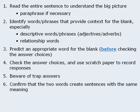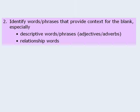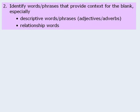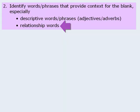So that's the general strategy. Now before we examine each step in greater detail, I want to point out that the second step is by far the most important concept. If we're unable to identify words and phrases that provide context for the missing word, there's no way we can determine which words best complete the sentence. We'll cover descriptive words in this lesson, and relationship words in a future lesson, once we've had time to practice with a few questions.